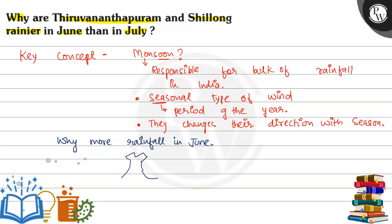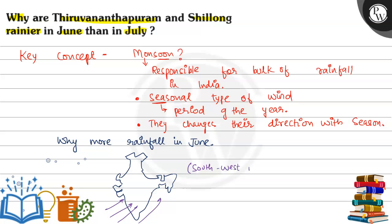Looking at the map, the southwest monsoon enters India — it is called the southwest monsoon because the wind direction is from the southwest. It has two branches: one enters through the Arabian Sea side and the other enters through the Bay of Bengal.